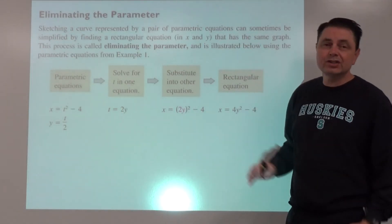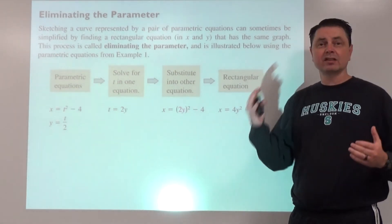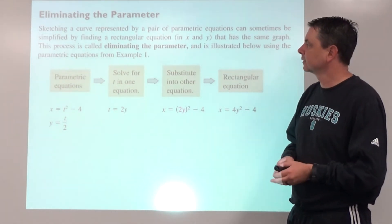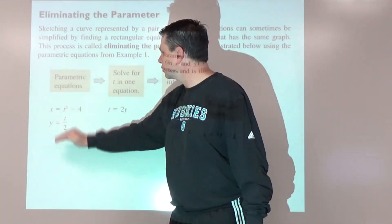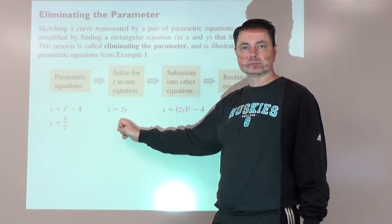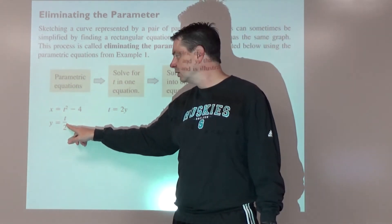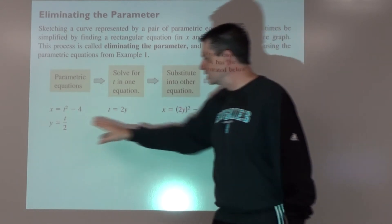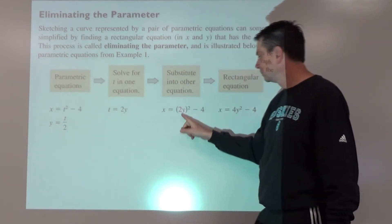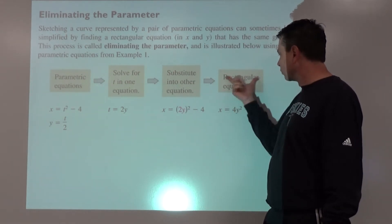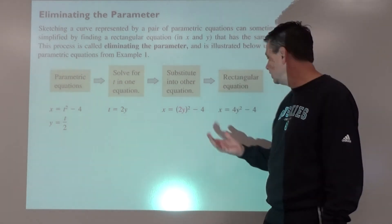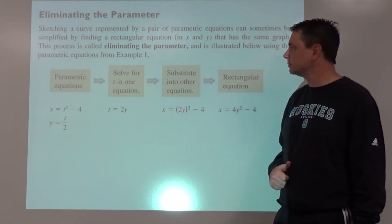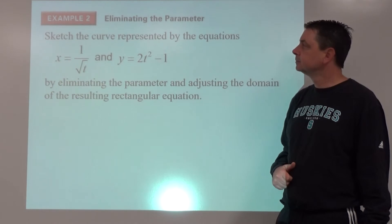If we want to eliminate the parameter and basically take it from a set of parametric equations, put it back into regular form, which we call rectangular, here are our steps. We have our parametric equations, take one of them and solve for t. This one would be the easiest one, so we multiply both sides by 2, we solve for t. Plug that, replace that, do substitution into the other equation. Since we use this one, we're going to substitute into the top one. Simplify. And there we have a rectangular equation. We can put it in whatever form we need to. This is x = 4y² - 4. But that's now in terms of x's and y's.